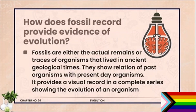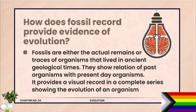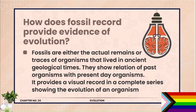Question number 4: How does fossil records provide evidences of evolution? Fossils jo hamare paas maujood hote hain, unki dating karke age find out karte hain, aur unki physical appearance ko existing individuals ke saath compare karte hain. Similarities aur dissimilarities ke base pe evolution mein ye baat batai jaati hai ke organisms simple to complex kis tarah se bane hain. Fossils are either actual remains or traces of organisms that lived in ancient geological times. They show relation of past organisms with present-day organisms, providing a record in a complete series showing the evolution of an organism.